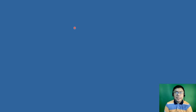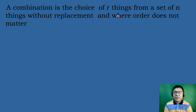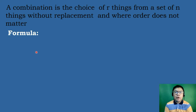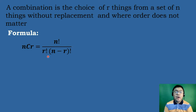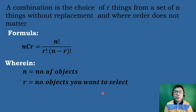On our previous video, we discussed the differences between combinations and permutations. In permutation, order does not matter, while in combinations, it is the choice of r things from a set of n things without replacement and where order does not matter. The working formula for combinations is nCr equals n factorial over r factorial times the quantity n minus r factorial, where n is the number of objects and r is the number of objects you want to select.